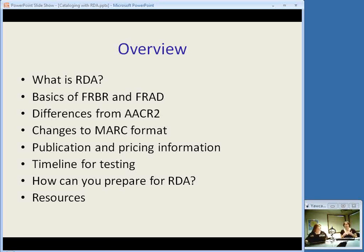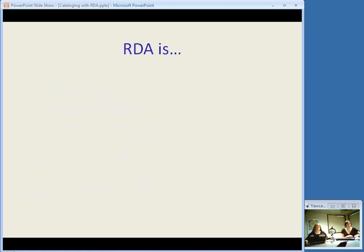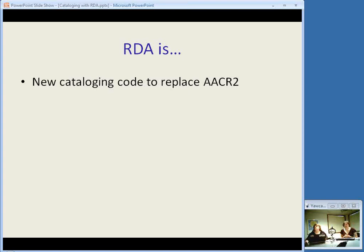At this stage in the game, an important thing to do is just to be aware of information out there. You don't have to worry about learning every single detail of RDA, but you do want to be aware of the basic concepts and when things change and have an idea of what's going on. So we'll start out by talking about what is RDA. The very simple answer is that it is a new cataloging code to replace the Anglo-American Cataloging Rules — AACR2.